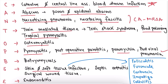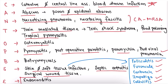S is the most important — skin and soft tissue infections, septic arthritis, surgical wound infection, folliculitis, furuncle, carbuncle, impetigo, and cellulitis. E is for endocarditis. This mnemonic covers essentially every disease of Staph. aureus.